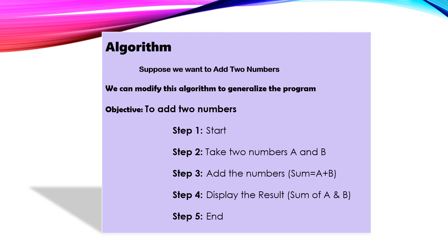Agar humein kisi particular action ke liye koi algorithm banana hai, toh aise hi jaise ke yeh algorithm hum ne yahan pe banaya. Aap ek practice karein ge — suppose aap ko bataya jaye ke aap apne liye chai banao. Is ke liye aap ek algorithm likhein ge. Aap us mein dekhein ge ke chai kaise banegi, kab tayaar hogi, phir is ke baad aap ko output lena hai. Toh woh try karein — ek algorithm — takay aap ko yeh concept clear ho jaye.